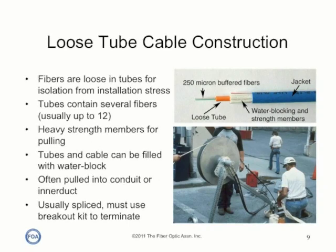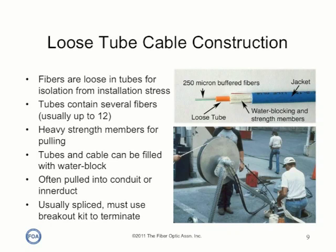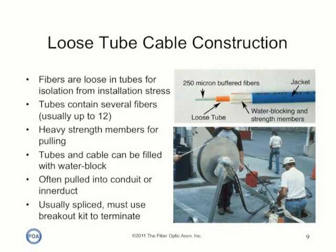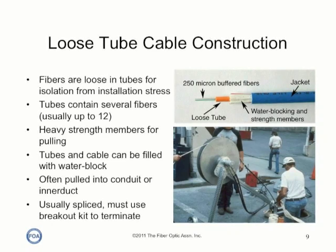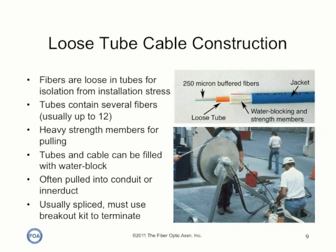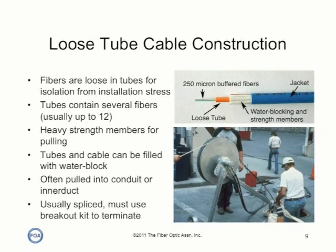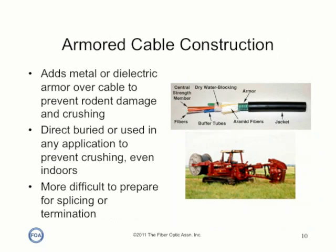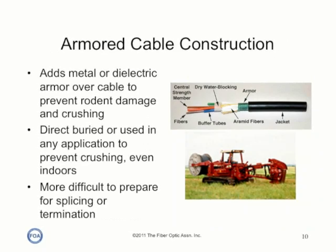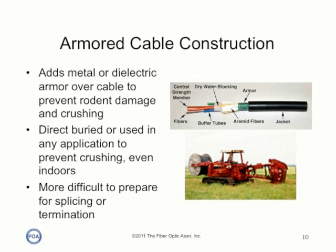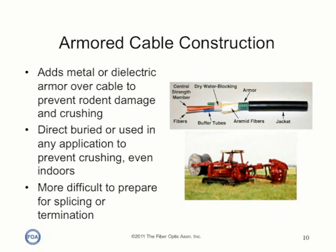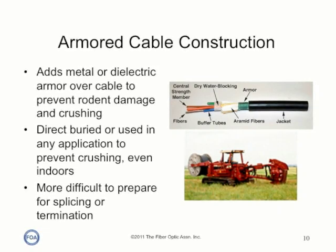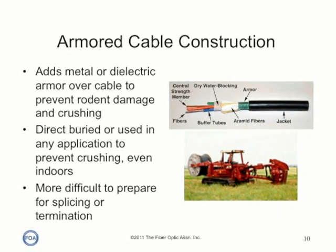If directly terminated, the installer must use a breakout kit to terminate the fibers as they are too fragile to handle safely. Breakout kits use one millimeter tubing called furcation tubing to sleeve the fibers before termination. Armored cable adds metal or dielectric armor over the cable, typically to prevent rodent damage in outdoor direct burial installations.